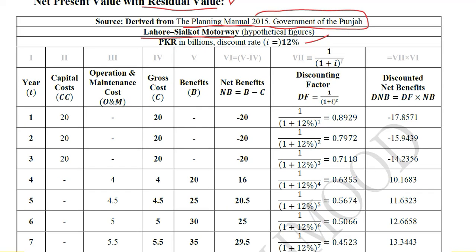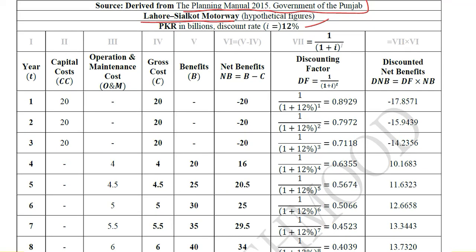We have seen these columns before — just for a reminder. The first column is time. The second is the capital cost, and the third is the operation and maintenance cost. Then there is the sum of these two components: capital cost and operation and maintenance cost. So the sum is here — 20 plus 0 equals 20, and 0 plus 4 equals 4.